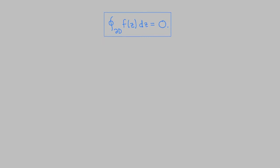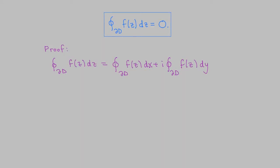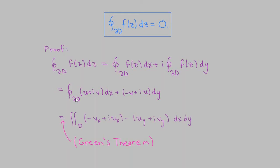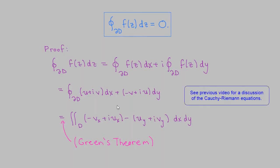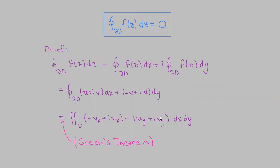Let's prove the Cauchy-Goursat theorem. Starting from the definition of the integral, writing u and v for the real and imaginary parts of f, we get integrals of (u + iv) dx and (−v + iu) dy. Applying Green's theorem converts this to a double integral over d. The real part of the integrand gives −∂u/∂x − ∂u/∂y, and the imaginary part gives i(∂u/∂x − ∂u/∂y), both of which are zero on d by the Cauchy-Riemann equations. Since the integrand is always zero, the double integral equals zero, completing the proof.